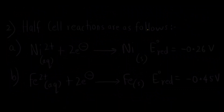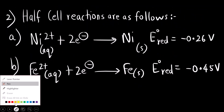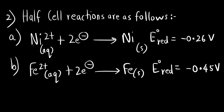Let us understand with the help of one more example. Here, one reaction is nickel ion accepting two electrons to form nickel electrode. Another is of iron. Again, two values are given but both are negative values.